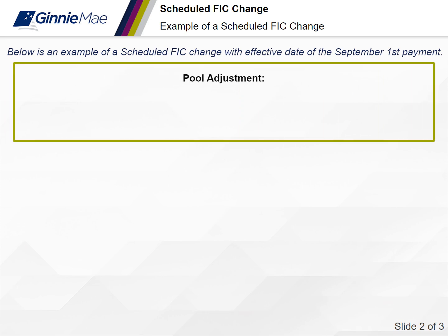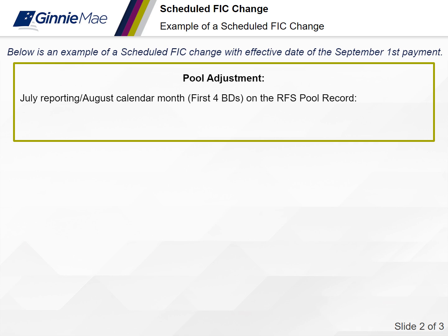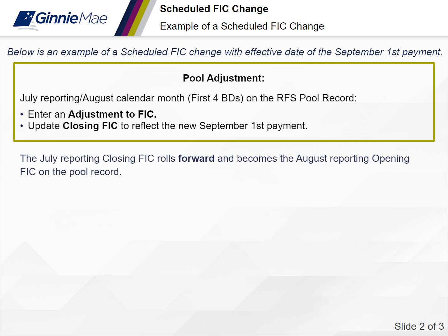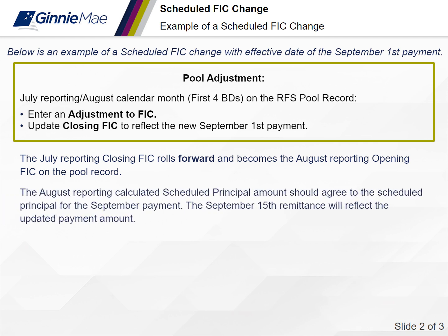First, the pool adjustment: when August/July activity is reported during the first four business days of the August calendar month, the adjustment to FIC and closing FIC updates must be entered on the pool screen. By updating the July reporting closing FIC, the data rolls forward and becomes the August reporting opening FIC. The calculated scheduled principal amount for August reporting should agree to the scheduled principal for the September payment, so the remittance on September 15th will reflect the updated payment amount.